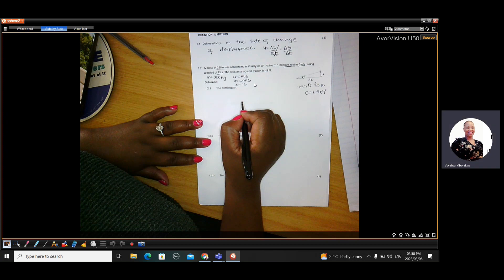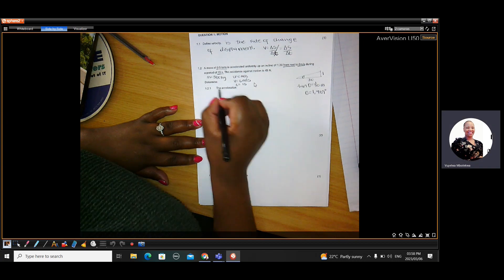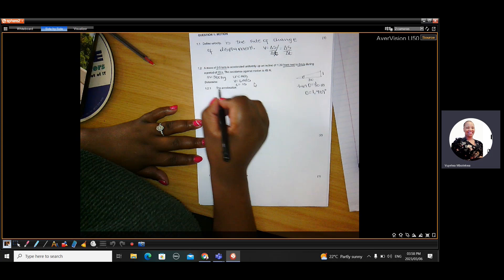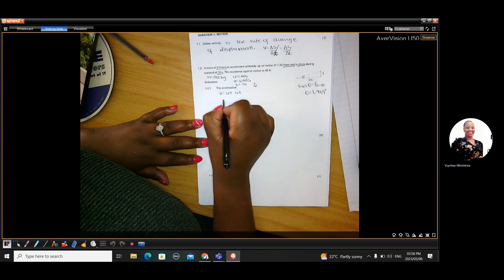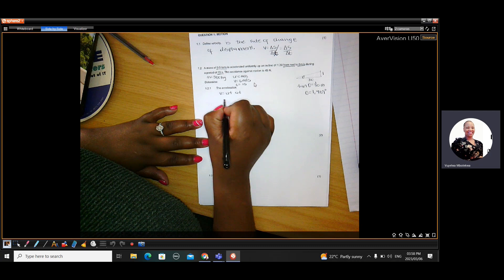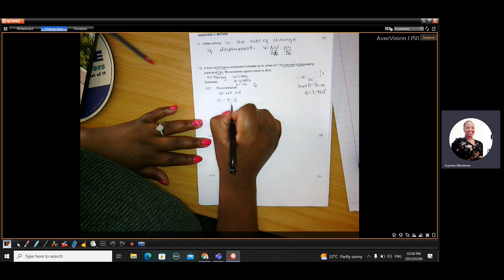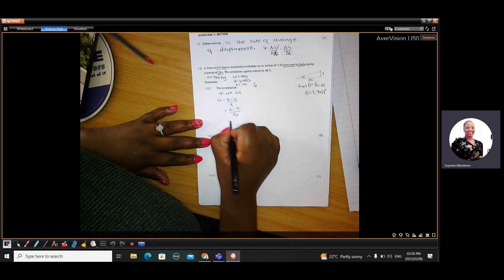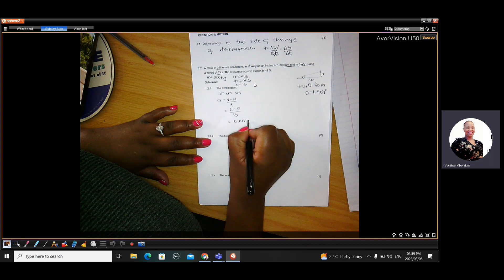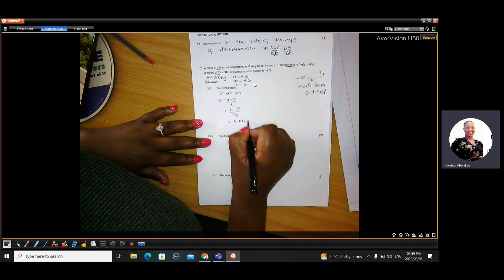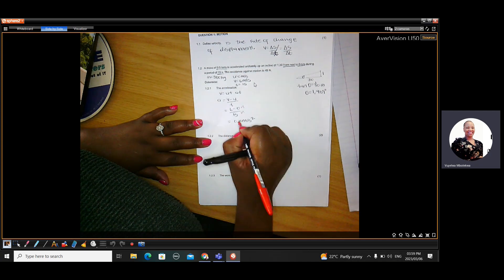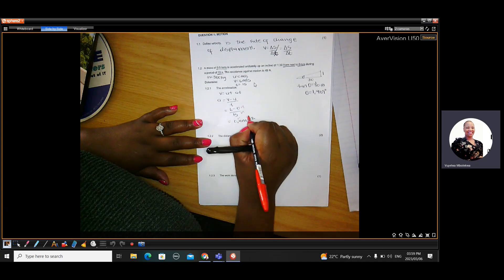So to calculate acceleration, you will say V is U plus AT. And then make A subject of the formula. It's going to be V minus U over T, which is 6 minus 0 over 15. And that came as 0.4 meters per second squared. So this was a whole two marks. So it came to two marks.